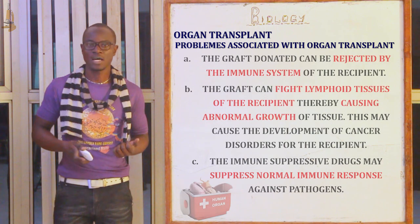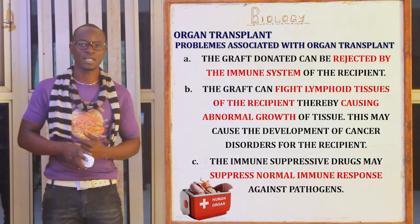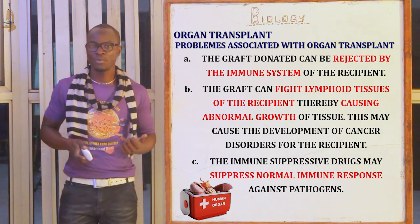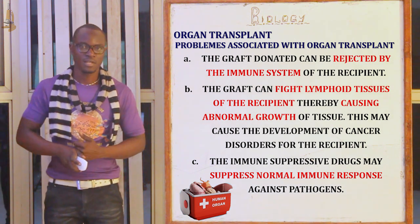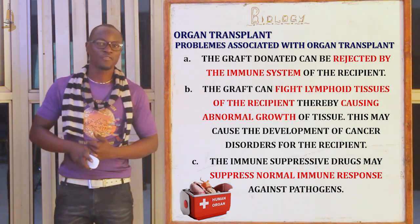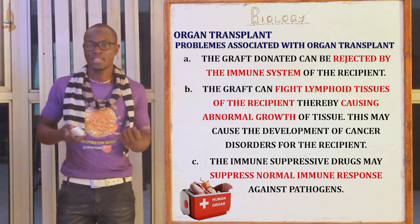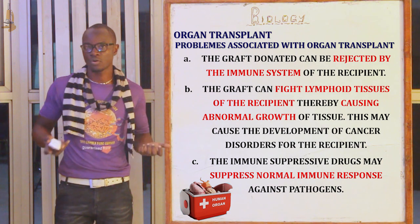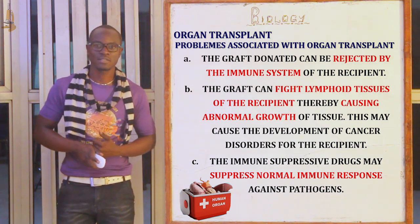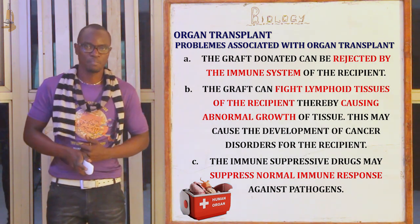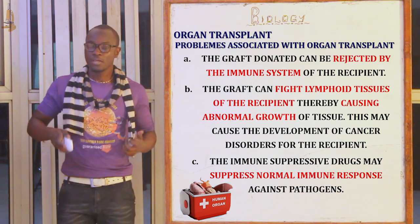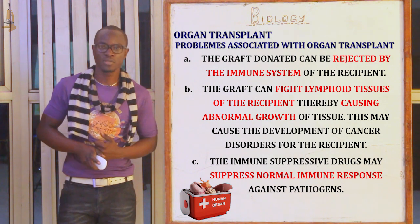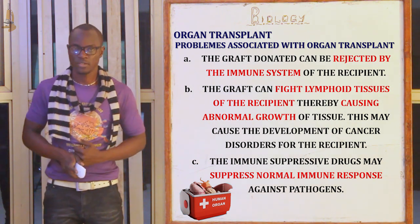Finally, let's look at the problems associated with organ transplant. The graft can be rejected by the immune system of the recipient. The graft can fight the lymphoid tissues of the recipient, causing abnormal growth of the tissues, or may lead to cancer tendencies in the recipient. Finally, the immunosuppressive drugs may suppress the normal immune response against pathogens.